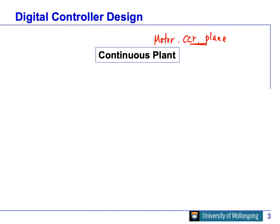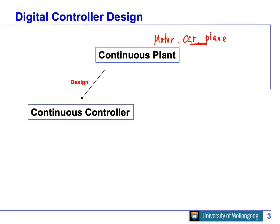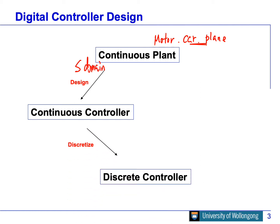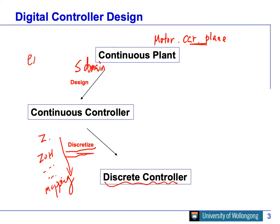There are two different ways to address this. First, we can design a continuous-time controller using Laplace transform in the S domain, and get a continuous-time controller. Then we discretize the controller. There are many different ways to do this — one is just the Z transform, the second way is the zero-order hold, and another way is the mapping of poles between the S domain and Z domain. After discretization, we get a discrete controller. This is the method called design by emulation.